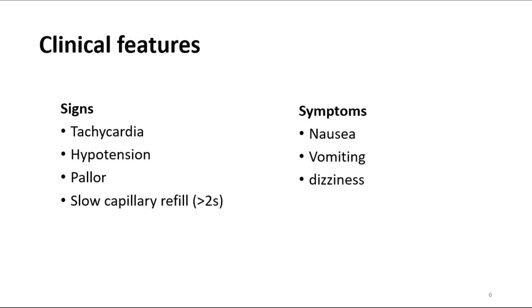Other signs include peritonism, which could be due to uterine rupture causing peritonitis, reduced urine output, tachypnea, and also narrow pulse pressure.